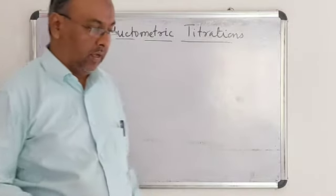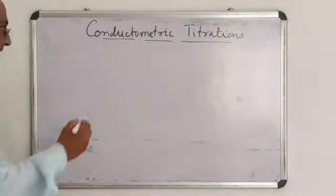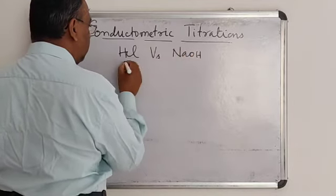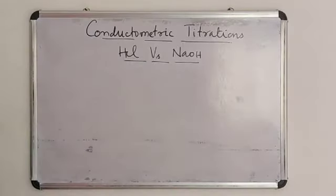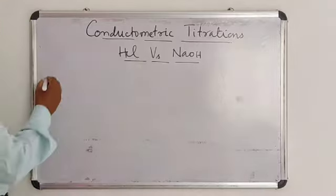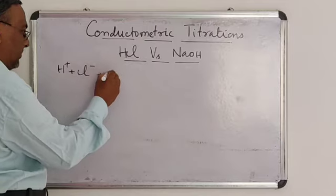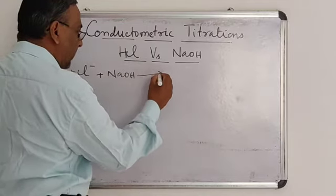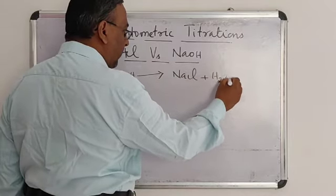The first conductometric titration in your syllabus is the titration between a strong acid and a strong base — that is hydrochloric acid versus sodium hydroxide. This is an acid-base titration, that is, a neutralization titration. When hydrochloric acid is titrated against sodium hydroxide, sodium chloride salt and water are formed.